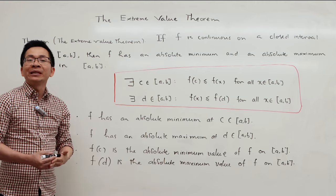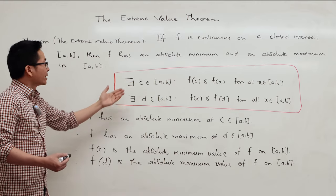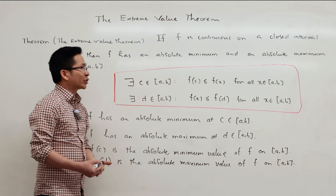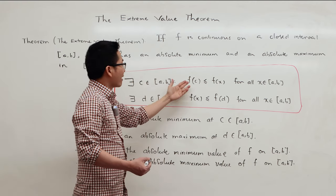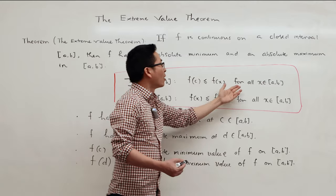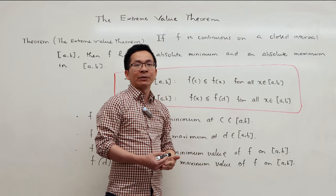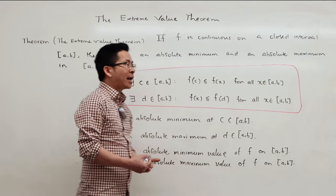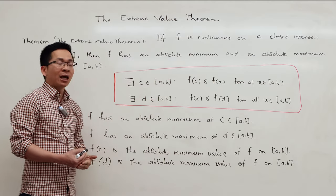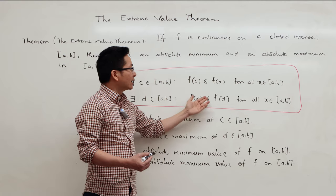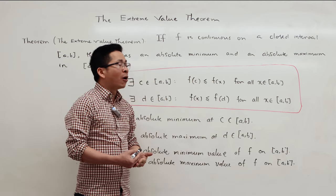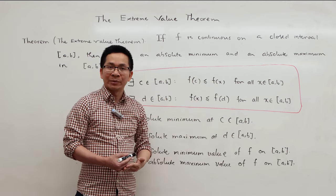What does it mean by that? It means that there exists some c in the interval ab such that f of c is less than or equal to f of x for all x in the interval ab. And there also exists some d in the interval ab such that f of x is less than or equal to f of d for all x in the interval ab.